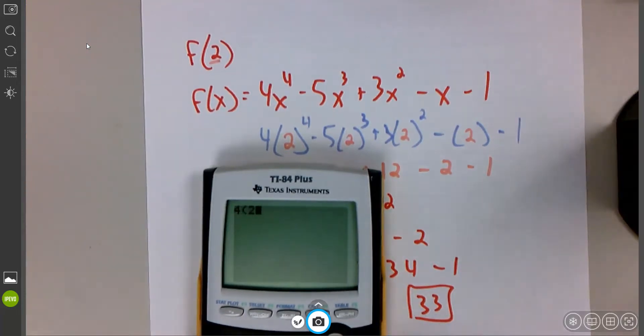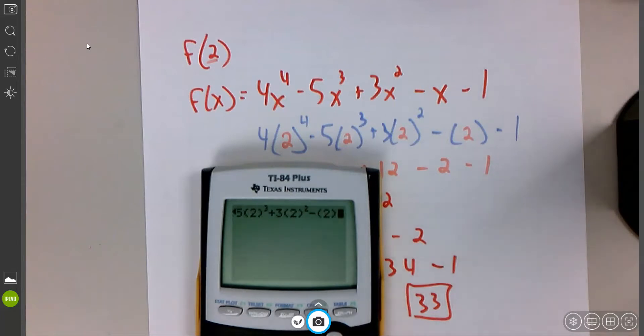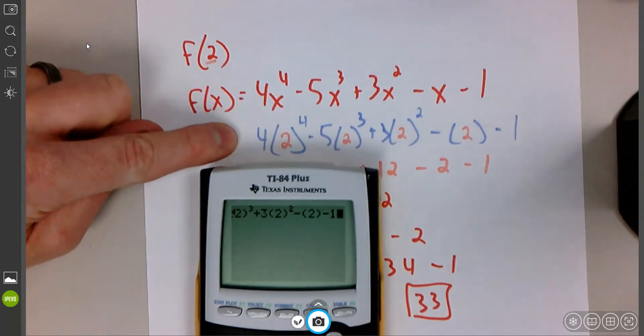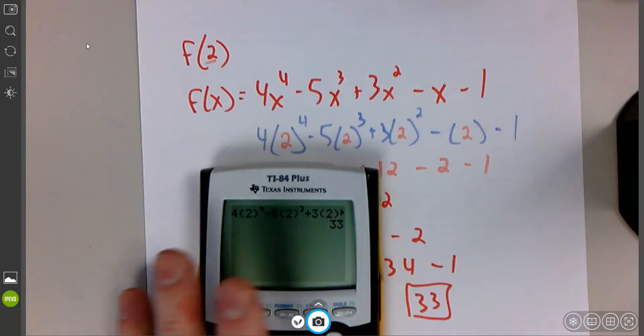So 4, parentheses 2 to the fourth, minus 5, parentheses 2 to the third, plus 3, parentheses 2 to the second, minus 2 in parentheses. I'm not going to break my streak. Minus 1. So I just typed in exactly what I saw here. And if I'm a decent math teacher, I should be able to do this. Hey, awesome. I got 33, so I know I did it right.